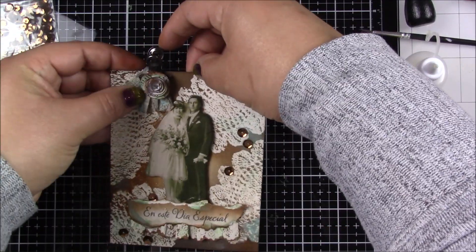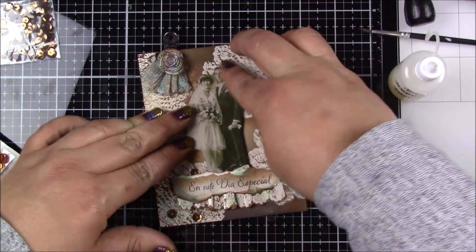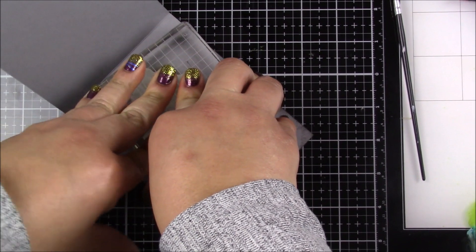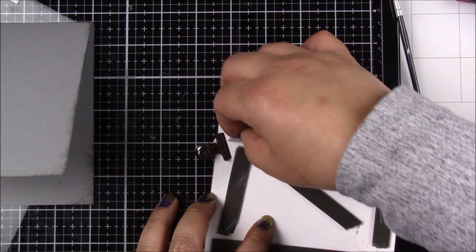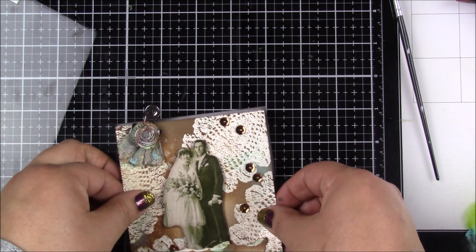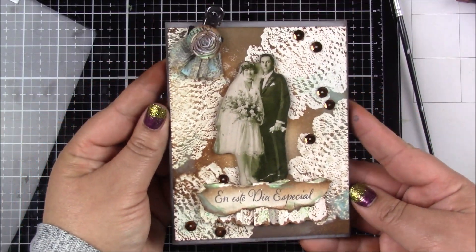The next part is working on the card base, which is made out of gray cardstock. I'm inking the edges with pumice stone ink, and then right in the middle and on the inside I'm stamping the same image with the gray tint embossing powder to give it more of a watermark look. Then with some black foam tape I adhere the panel to the card base, and that finishes the project.